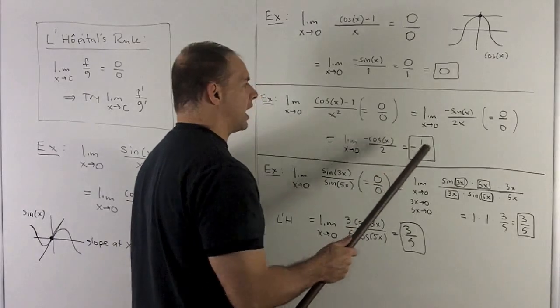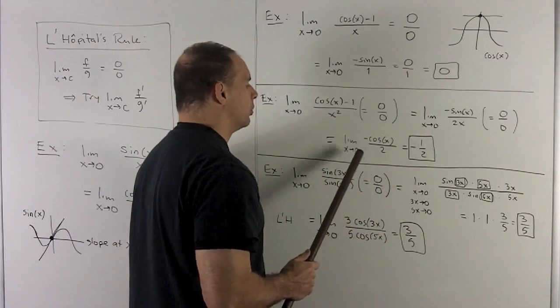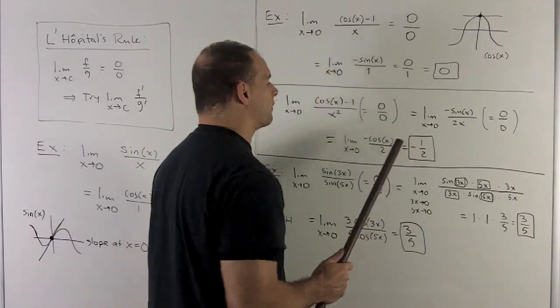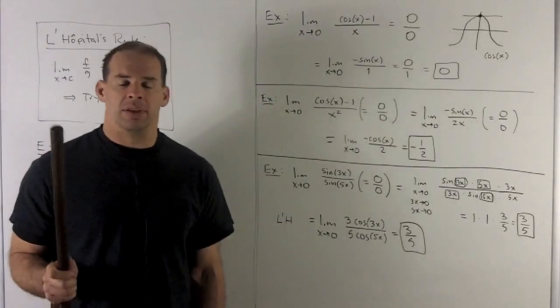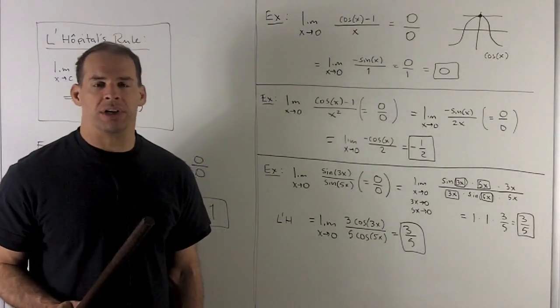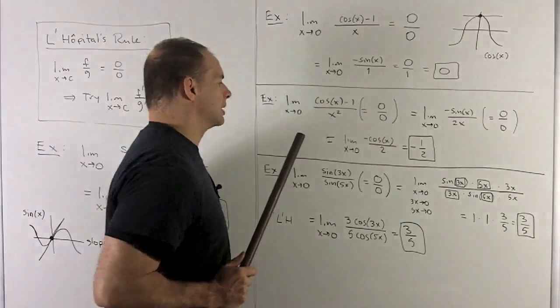So we try it again. Derivative of the sine is cosine. Derivative of 2x is 2. Put my 0 in. And now it comes minus 1 half. This will turn up later when we do power series. But for now, it's just a nice application of L'Hopital.